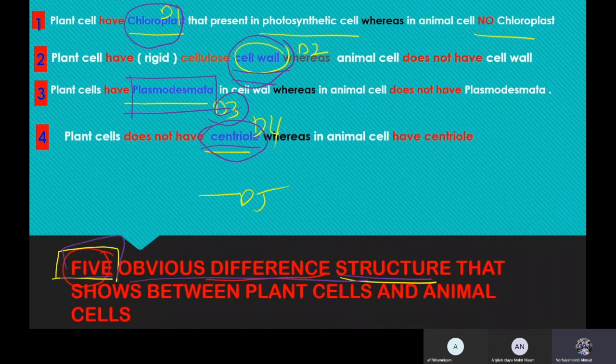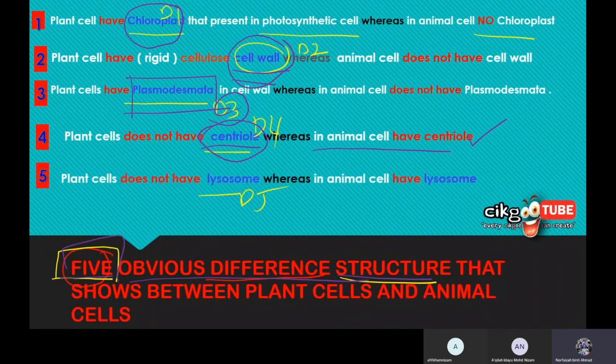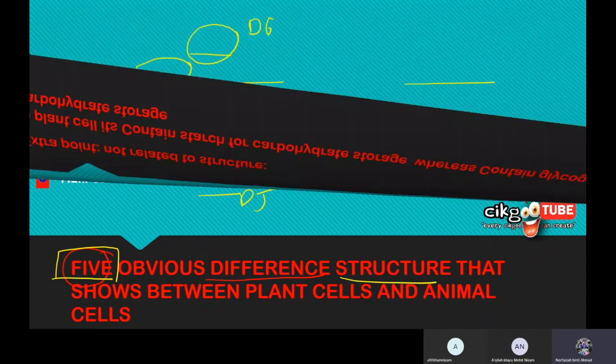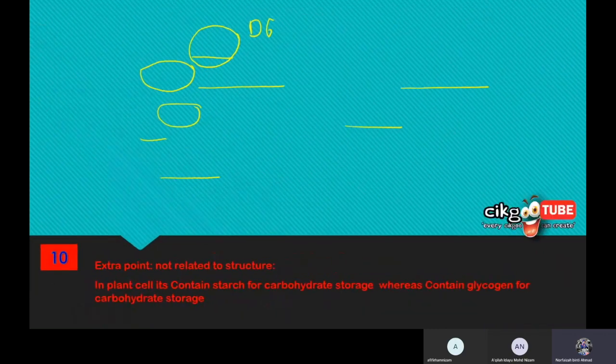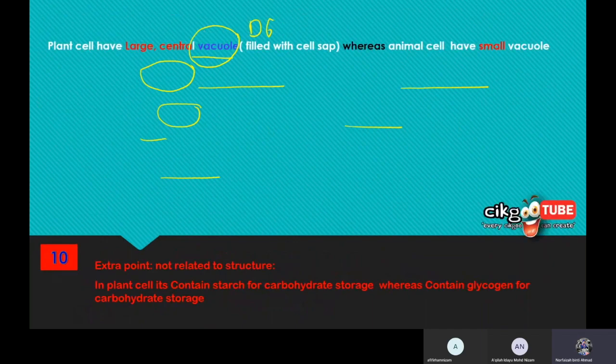Last but not least, for the obvious five differences structure, animal cell has lysosome whereas in plant cell doesn't have lysosome. That's the five main one. Another point that teacher mentioned just now, difference number six, is vacuole. Plant cells have a large central vacuole whereas animal cell has only small vacuole.